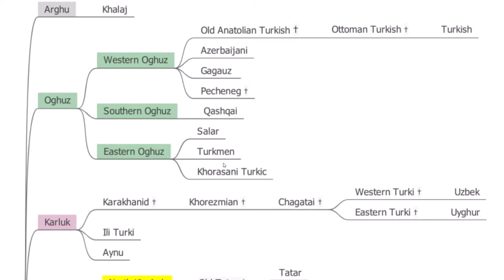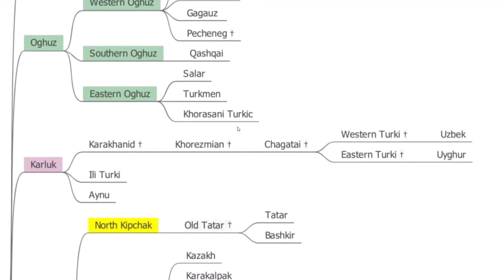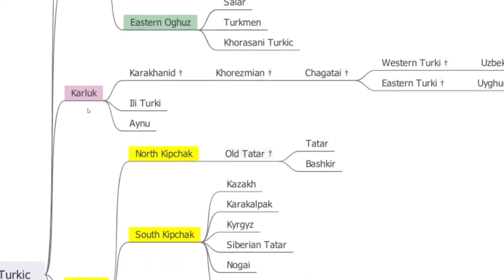The written version of Turkmen is quite similar to Turkish and Azerbaijani. We also have Khorasani Turkic, which is similar to Turkmen but considered the southern branch of it, though it is also a distinct language.